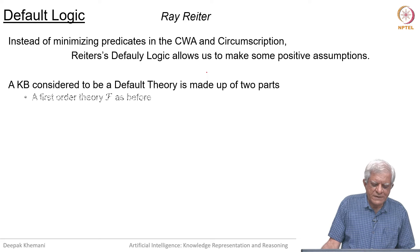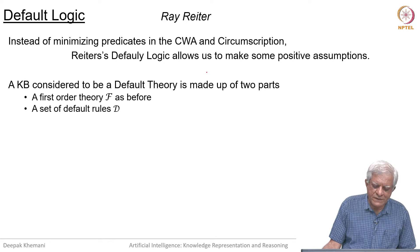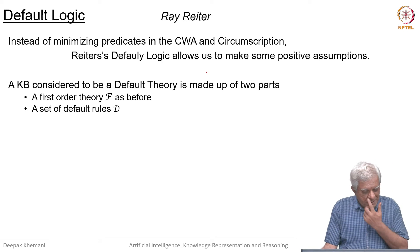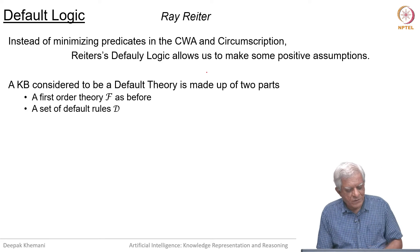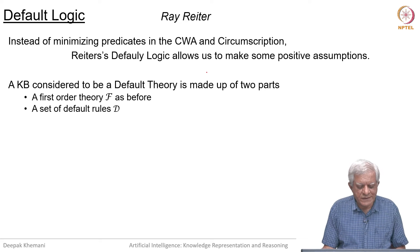Our knowledge base, considered to be a default theory, is made up of two parts: the first-order theory F and a default set of default rules D.